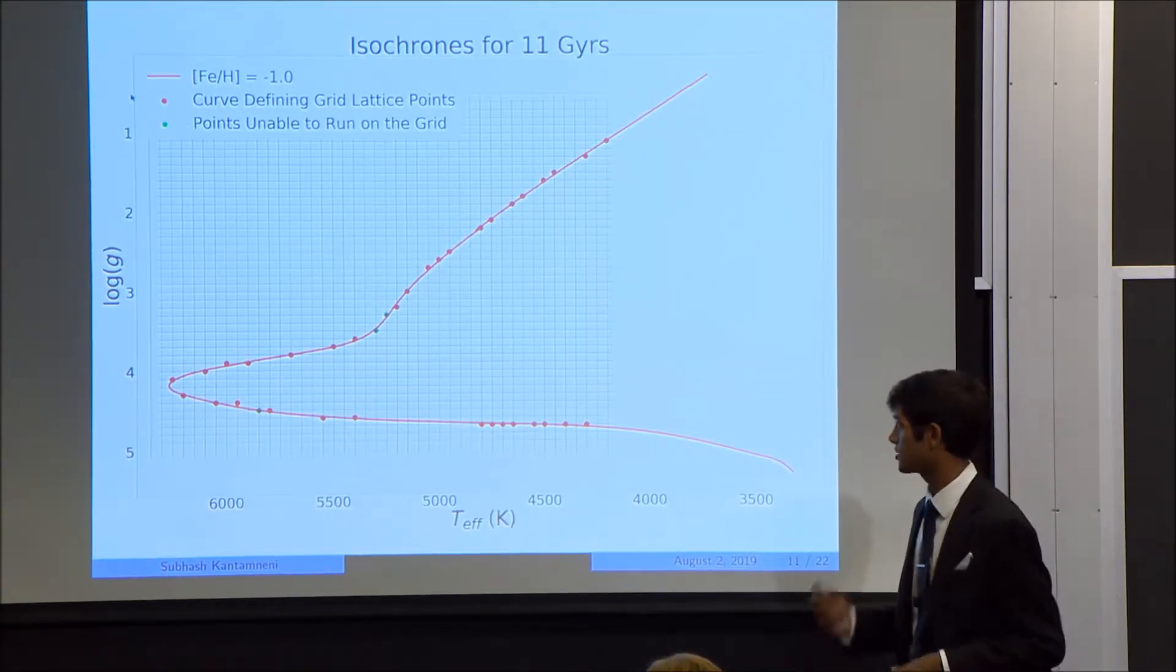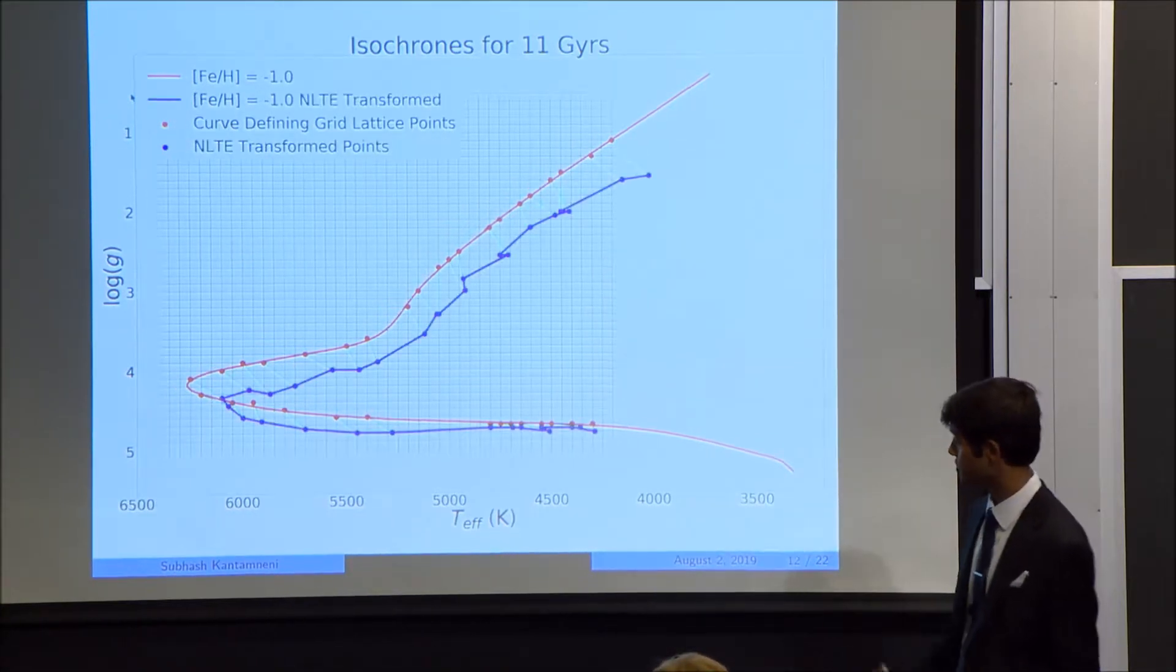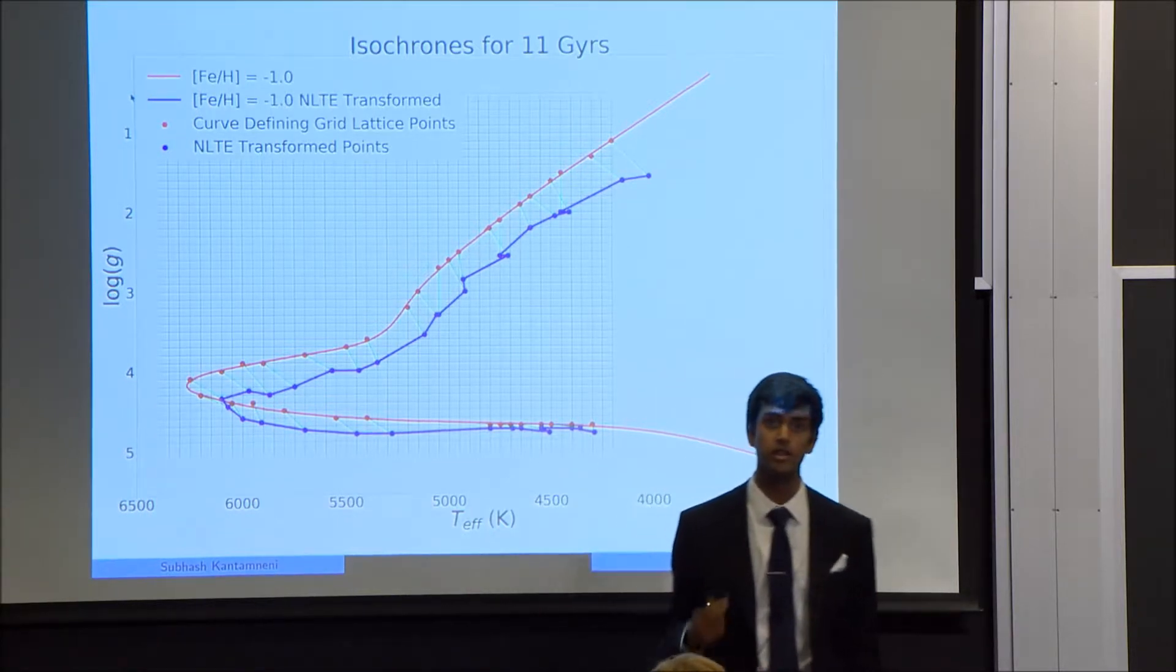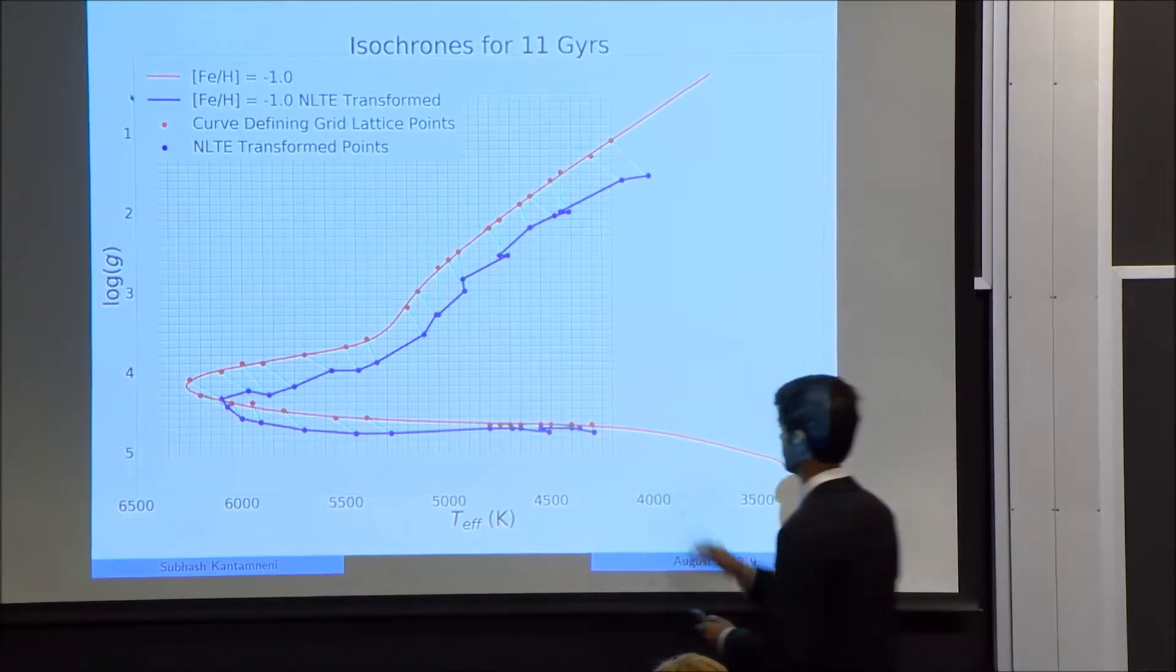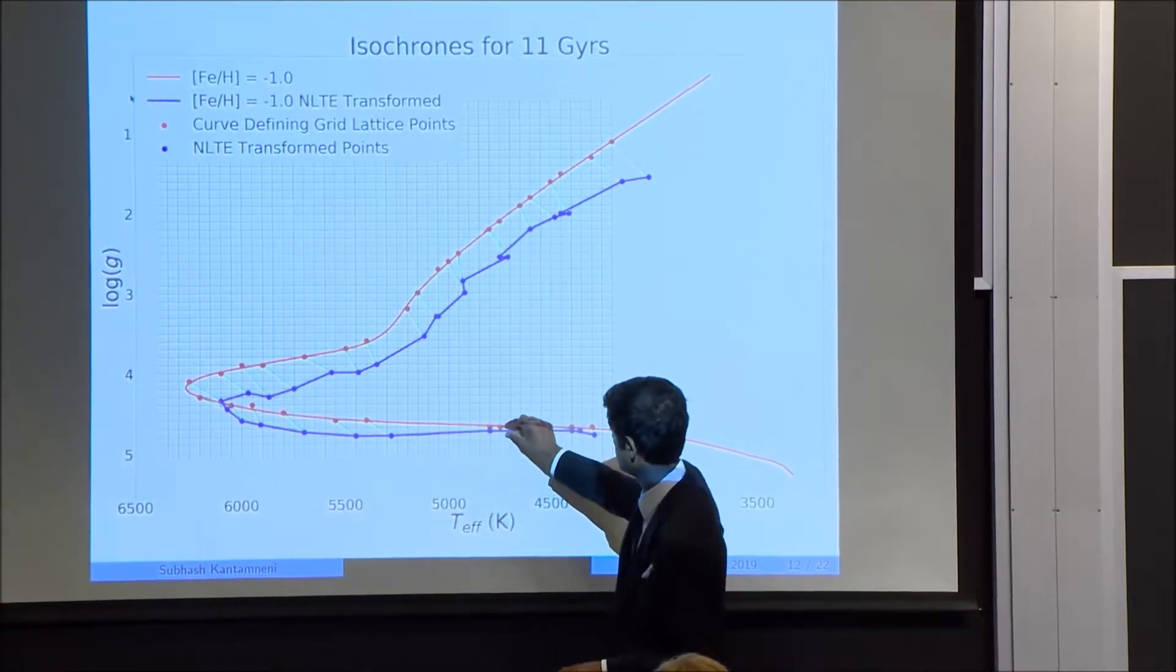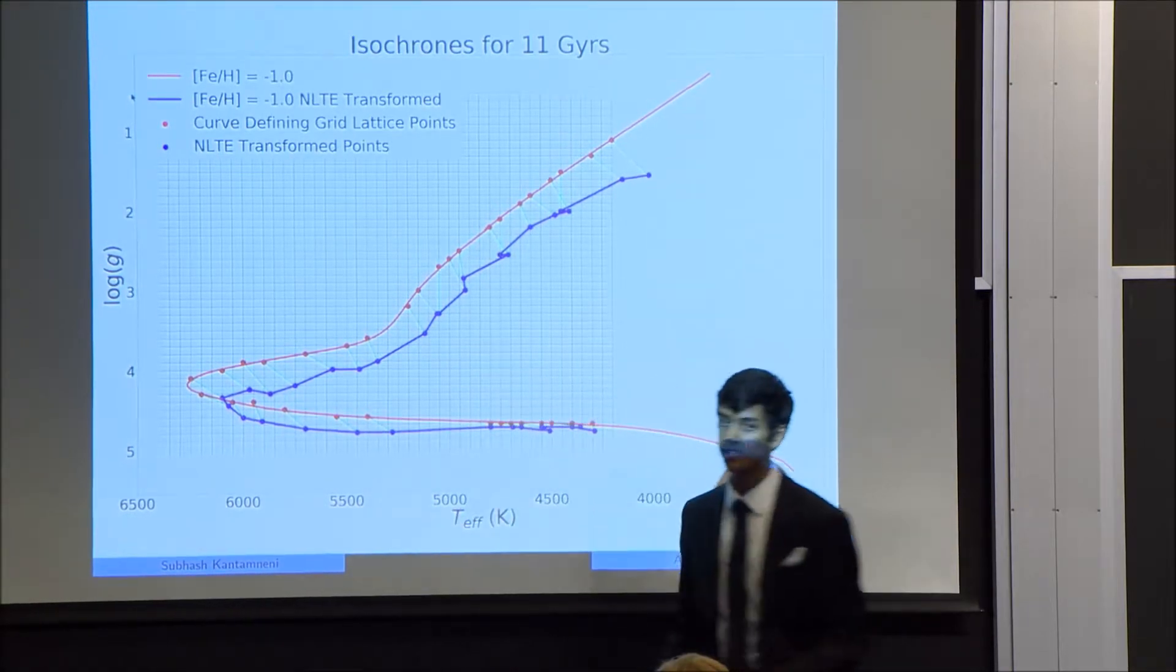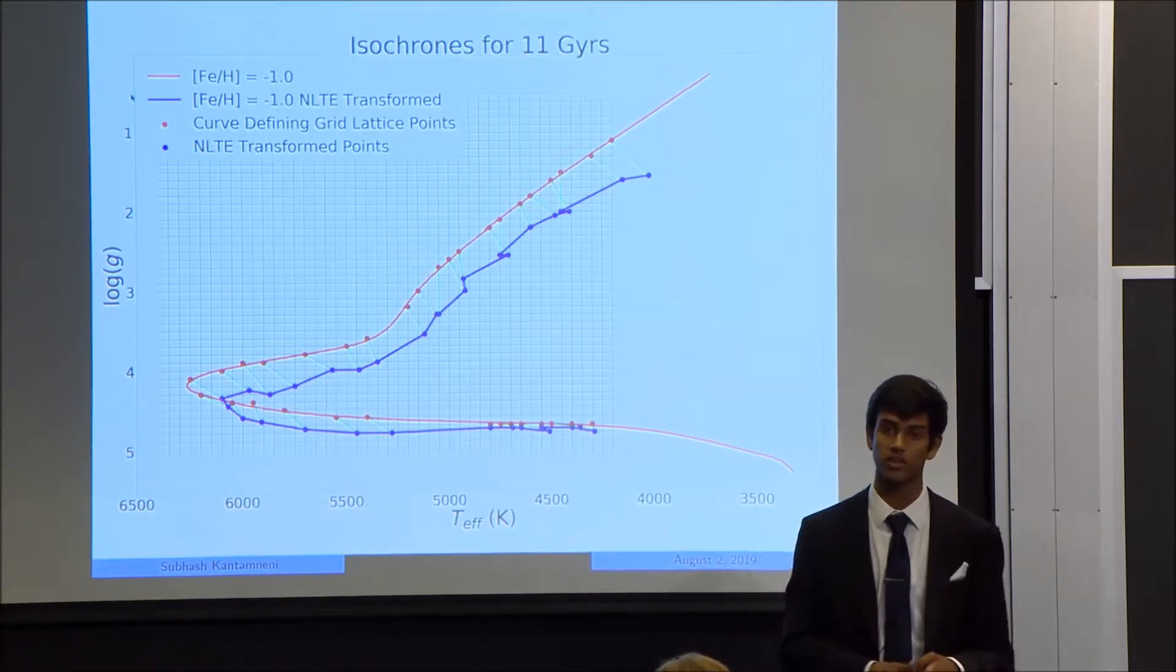So I ran the NLTE stellar calibration on these 34 data points, and this is what we get. So this curve in blue that you're looking at right now is the first theoretical isochrone ever created using an NLTE stellar model. So this is where stuff gets really interesting. You can see that the vertical shift between the LTE and non-LTE isochrone actually increases as we move towards the top of the graph. And since the vertical axis is gravity, this means stars with lower surface gravities have larger gravity corrections.